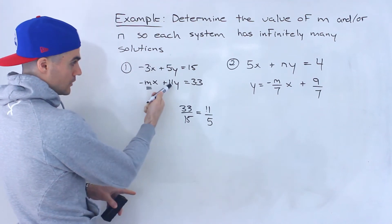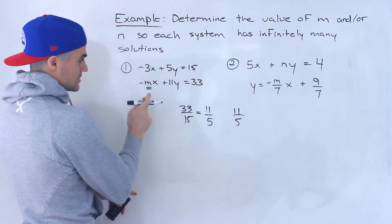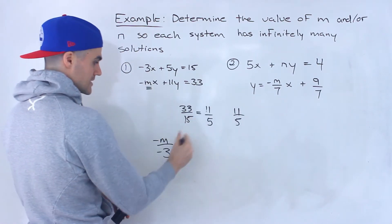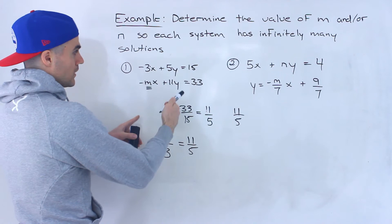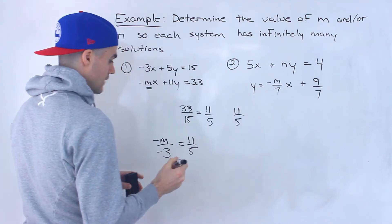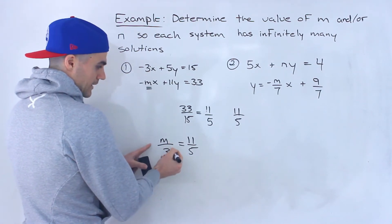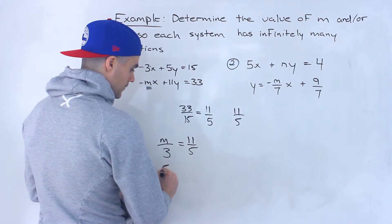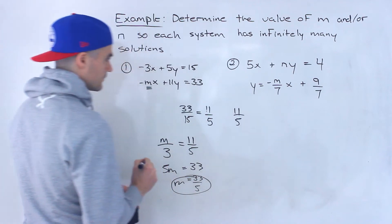This doesn't simplify further. And then notice this: 11 over 5. So it's the same ratio. And so what that means is that negative m over negative 3 has to equal that same ratio, 11 over 5. Or you can go the other way — you could say negative 3 over negative m equals 5 over 11. Either way, you're going to get the same value. Notice the negatives cancel out, so they're irrelevant. We can just cross multiply. We'd have 5m equals 33, so m would be 33 over 5.